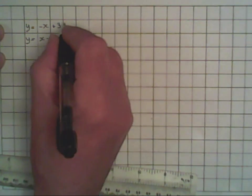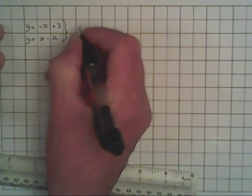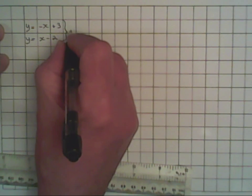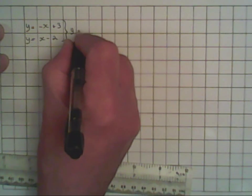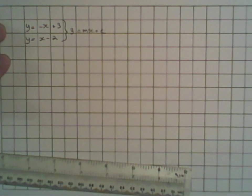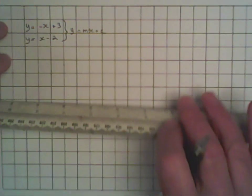This is the arrangement for the formula for a straight line, which has the formula y equals mx plus c. So what we need to do now is plot the graph for these two equations and then look to see where they are simultaneous.